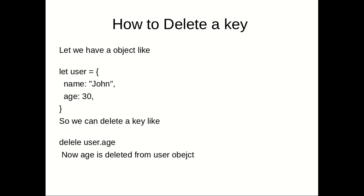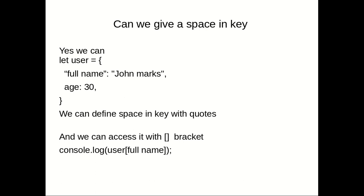The next question is: how can we delete a key? Everyone knows how to add a key — for example, you can add 'contact' with a contact number. To delete a key, use the `delete` keyword followed by the object name and the key, like `delete user.contact`. Now, can we provide a space in a key name? Yes, we can — by wrapping the key in double quotes or any kind of quotes.